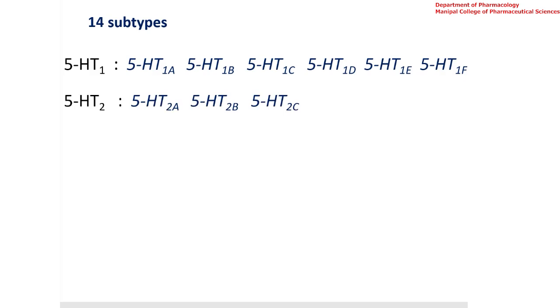These 7 classes are further subdivided into 14 subtypes. The 5-HT1 contains 6 subtypes: 1A, 1B, 1C, 1D, 1E, and 1F. 5-HT2 consists of 3 subtypes: 2A, 2B, and 2C. 5-HT5 has 5-HT5A subtype. Among these, except 5-HT2B, all other subtypes are located in the central nervous system.